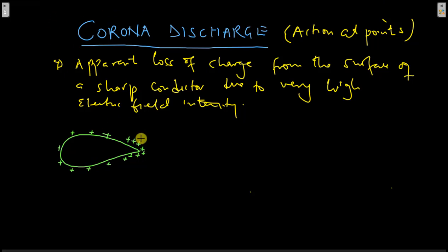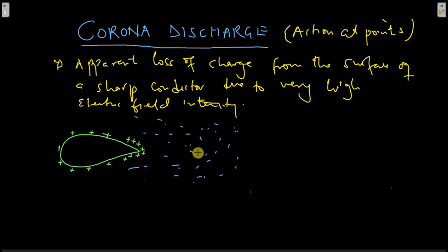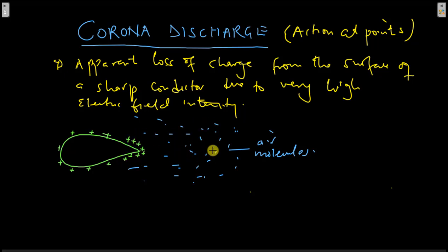This conductor is surrounded by air molecules around it. Because of the high electric field intensity at this point, which is caused by the high charge density, the air molecules around here are going to get ionized. This is very important — the air molecules around the sharp conductor get ionized, meaning they become positive and negative ions.